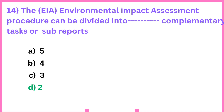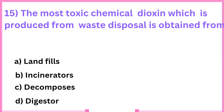15th: The most toxic chemical Dioxin, which is produced from waste disposal, is obtained from. Answer: Incinerators.